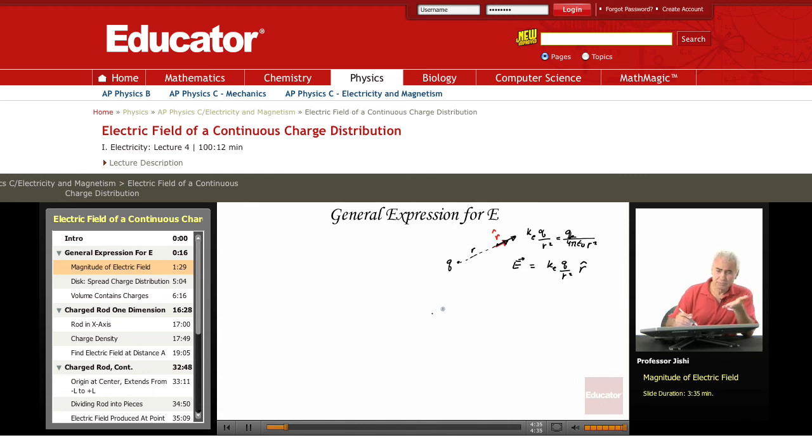What happens if I have a continuous charge distribution? It could be continuous in one dimension. For example, I could have a line of charge. I could have a rod, for example, a thin rod, and I spray it with charge. So, here I have a continuous charge distribution. Everywhere along the rod, I have charges. This is one dimension.